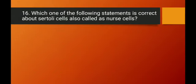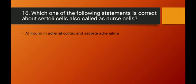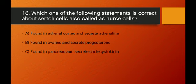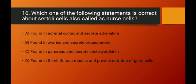Question number sixteen: which statement is correct about Sertoli cells (also called nurse cells)? Sertoli cells are responsible for nourishing developing sperms. Option A (found in adrenal cortex, secreting adrenaline) is wrong. Option B (found in ovaries, secreting progesterone) is wrong. Option C (found in pancreas, secreting cholecystokinin) is wrong. Option D — found in seminiferous tubules and provide nutrition to germ cells — is correct. Option D is the right answer.